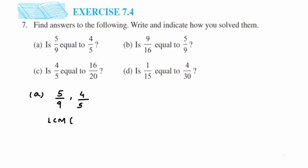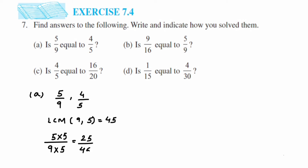First, we are going to take the LCM of 9 and 5 so that we can make the denominators the same. The LCM of 9 and 5 is 45. Now I'll change the denominator of both fractions using the LCM. With 9, what do I multiply to get 45? It's 5 — so 9×5 is 45. Multiply 5 in the numerator also, giving 25/45, which is an equivalent fraction of 5/9 with denominator 45.